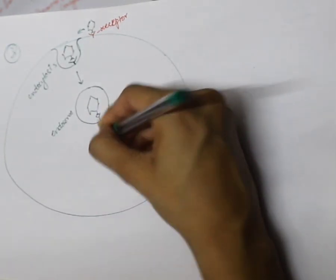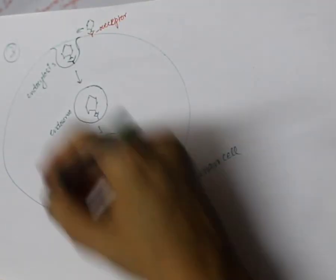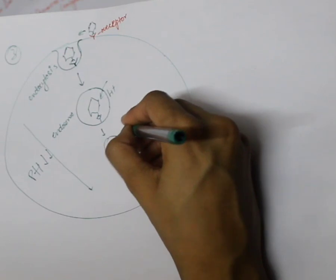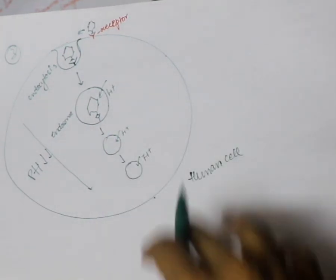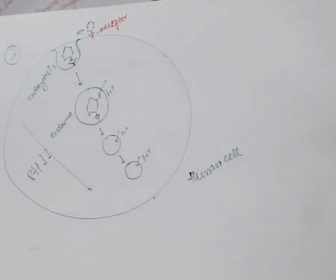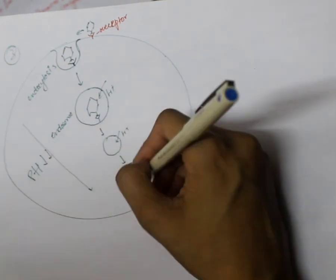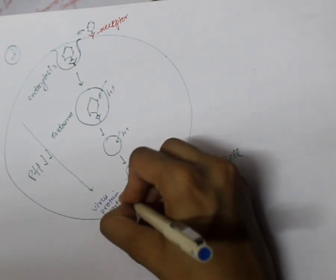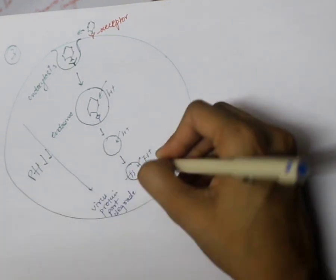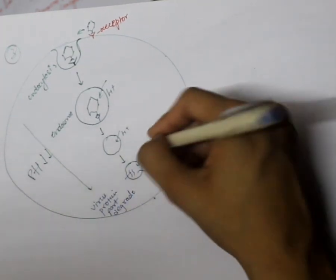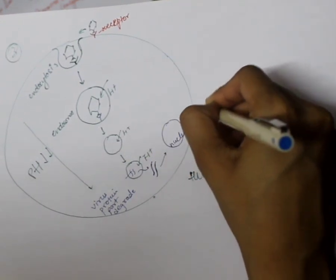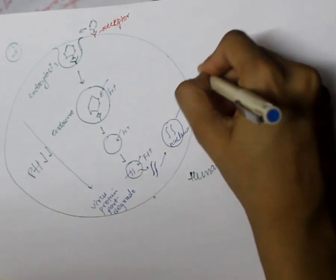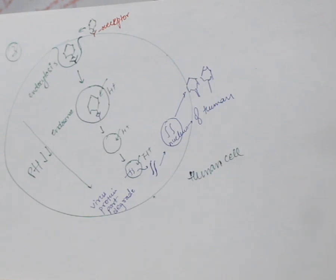As the endosome moves into the interior of the cell, the pH of the endosome decreases because H+ ions move in. This decrease in pH causes the protein part of the virus to degrade. Once the protein part degrades, the nucleic acid — RNA or DNA in the case of a virus — is exposed and enters the nucleus of the human cell, causing further replication of the virus and producing many copies.